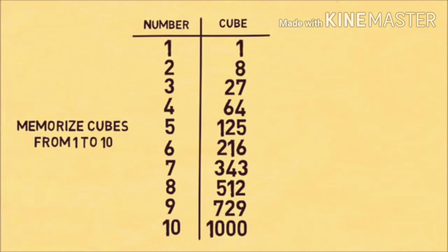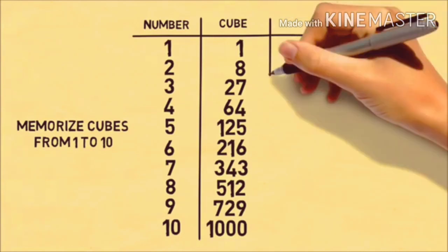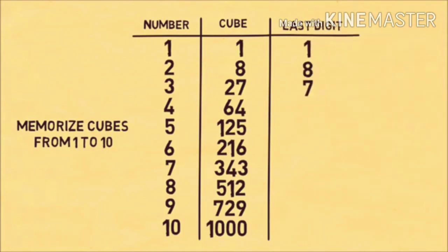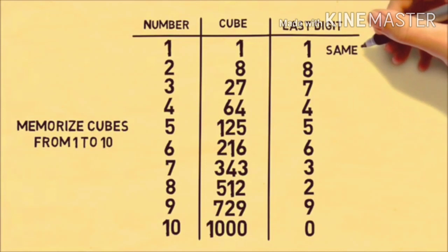Once we've written down these cubes, focus on the very last digit of each cube. What's important is that each of these 10 numbers ends in a different last digit, and that'll be very important to doing this trick. When you memorize these 10 numbers, you should also remember the last digit.